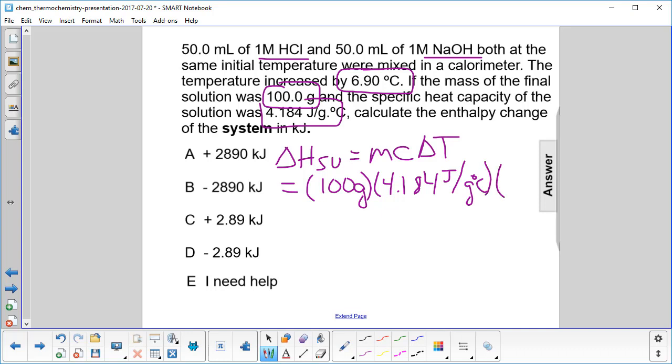We already said that delta T is positive, so that's a positive 6.90 degrees Celsius. Cancel the degree Celsius out there, which I didn't write anyway because I ran out of room. Cancel out the grams. We get something in joules.